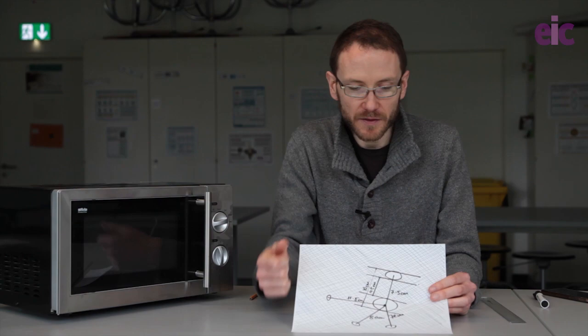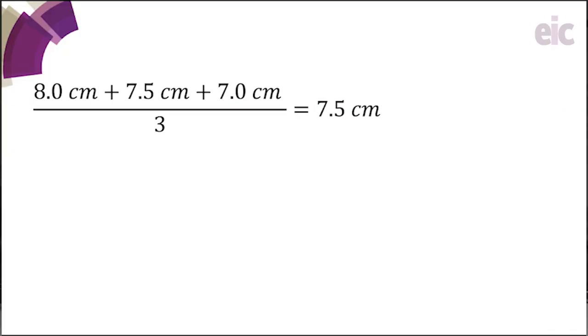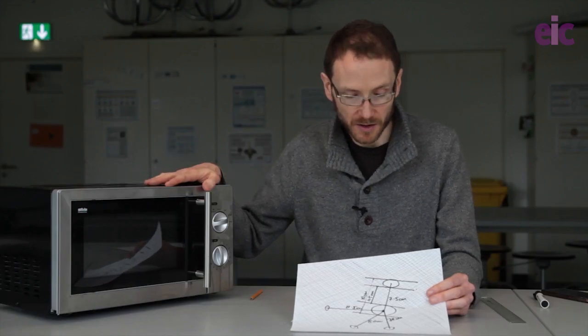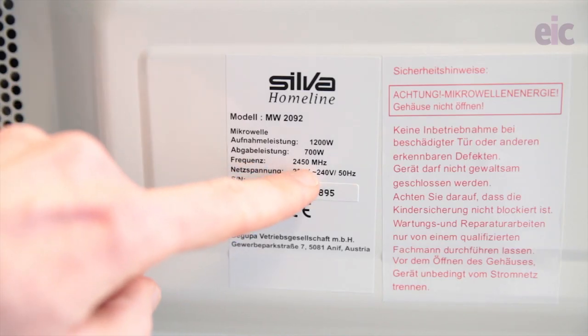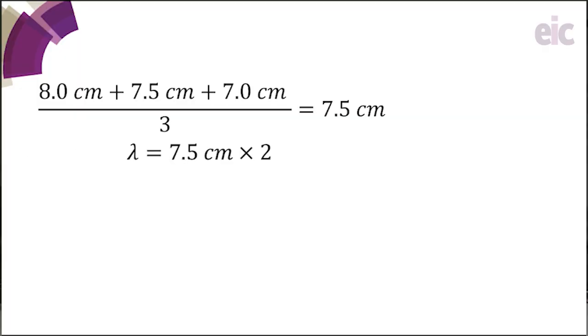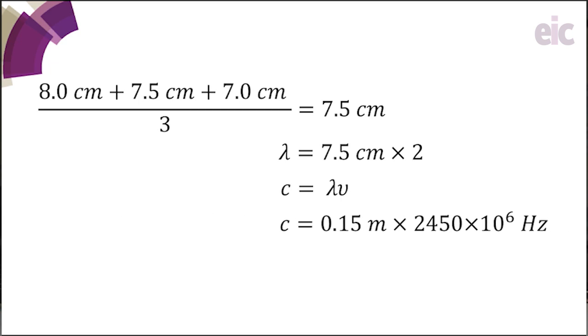I've taken these three values, averaged them out, that gives me seven and a half centimeters. By taking the reading from the frequency on the back of the microwave oven we can see that this oven is operating at 2450 megahertz, so that's 2450 times 10 to the 6 hertz. From speed being equal to frequency times wavelength that would give us a speed of light for the microwaves in this oven as being 3.7 times 10 to the 8 meters per second.